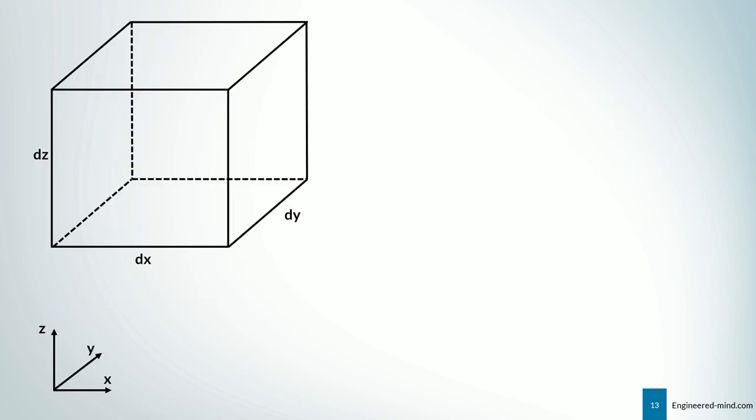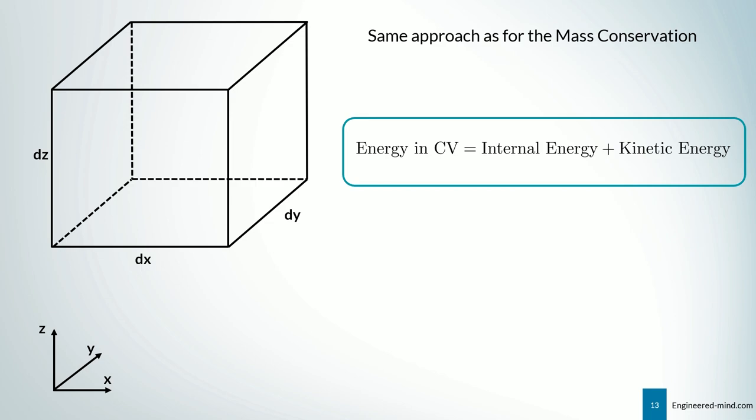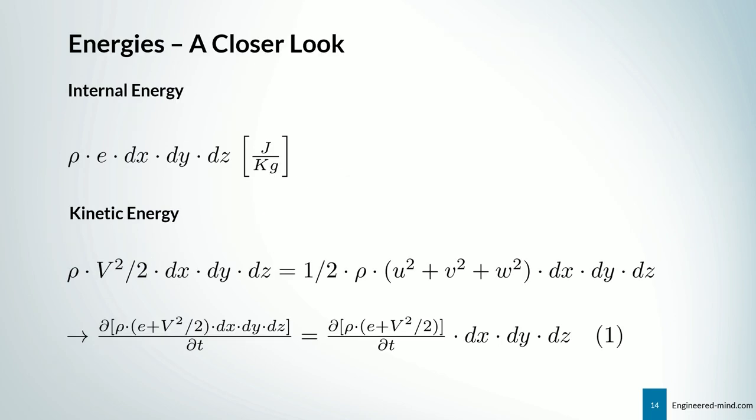Here we have our control volume and we use the same approach as for mass conservation. The energy in the control volume is the internal energy plus the kinetic energy. The internal energy is defined as ρ·e·dV and the kinetic energy is ρ·(v²/2)·dV. Taking everything together we have the partial derivative of ρ·(e + v²/2) with respect to t times the volume — this is Equation 1.